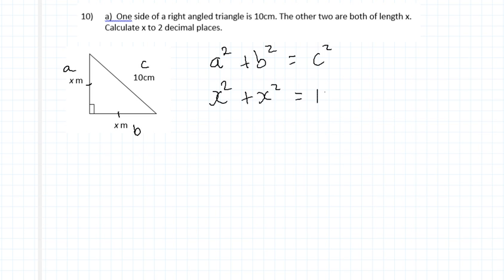x squared plus x squared would be simplified to 2x squared, that's two lots of x squared. And of course, we can then expand out the 10 squared, that becomes 100. So 2x squared equals 100.